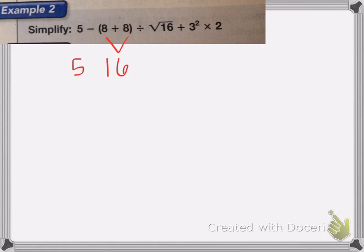Now I'm going to rewrite my whole equation. Five minus 16 divided by the square root of 16 plus three squared times two.